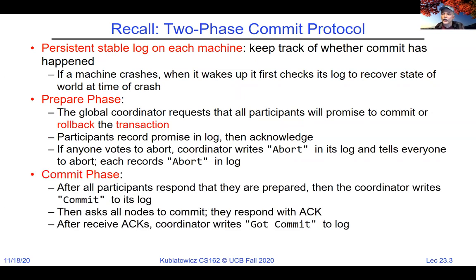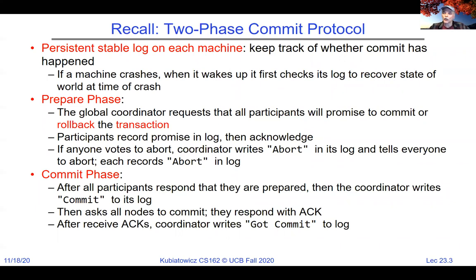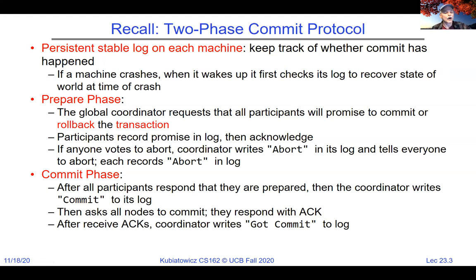If a node crashes in the middle, it will never come up with a different decision than the one it committed to. During the commit phase, if everybody said commit, then the coordinator tells everybody to do the actual commit — they all record that the final decision was commit. If any one participant decides to abort, then they all abort. The crucial idea is that it's atomic decision-making: either everybody commits or everybody aborts, with no mixing.